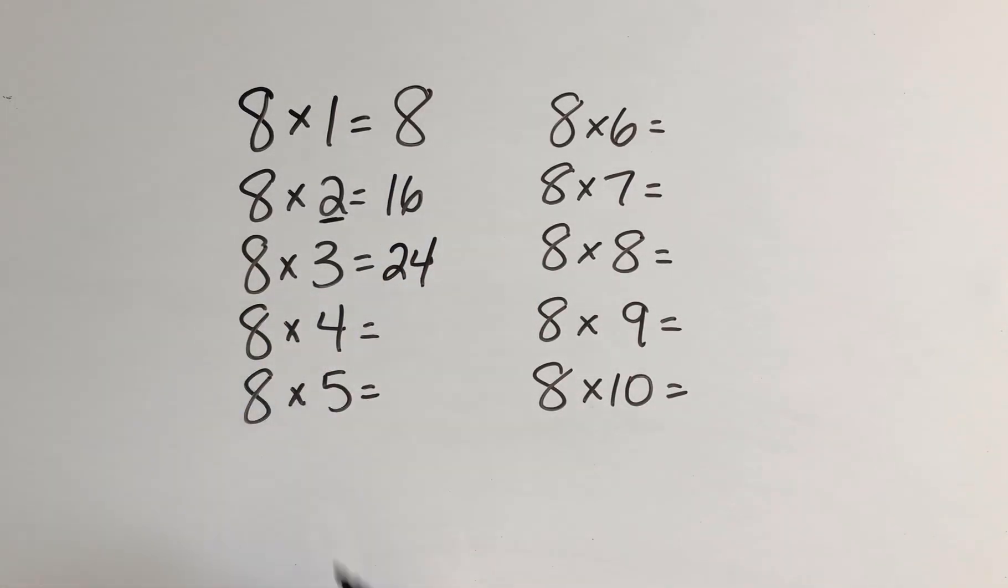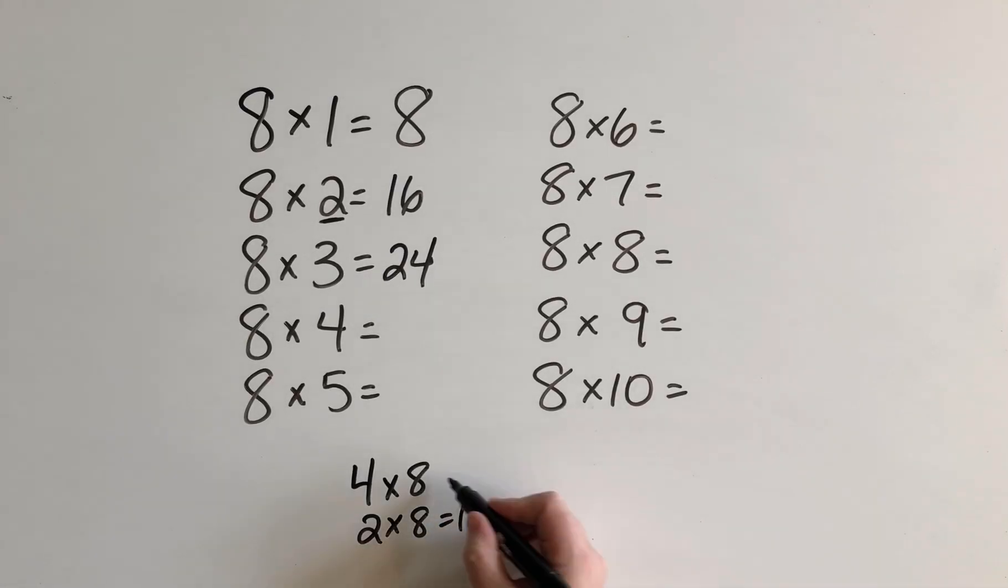For 8 times 4, I'm going to think in my head, I'm going to think about 4 times 8. And I know that 4 times 8 is the double of 2 times 8, isn't it? Because 4 is the double of 2. 2 times 8 was 16. So 4 times 8 must be the double of that, which is 32. That's what I'm thinking in my head.